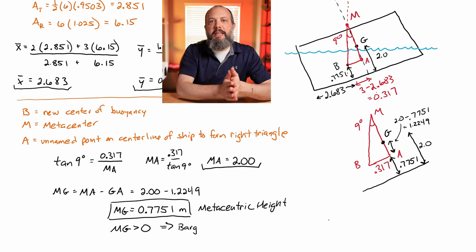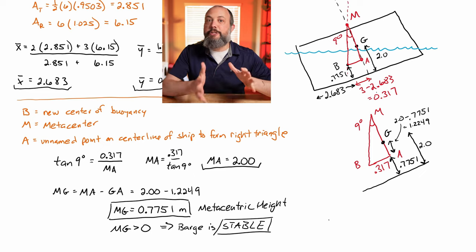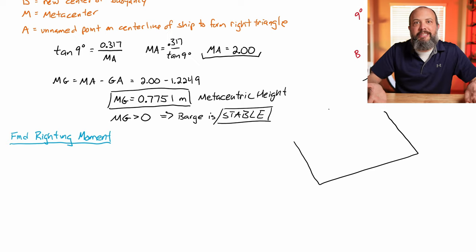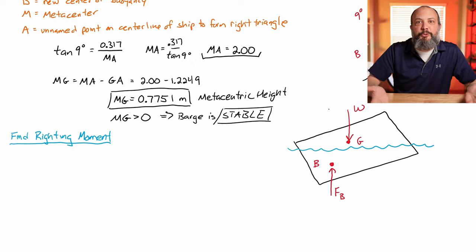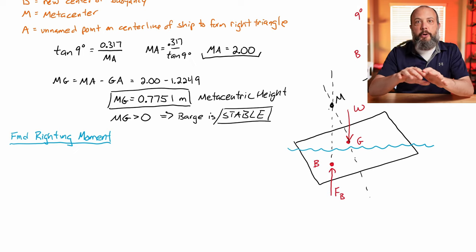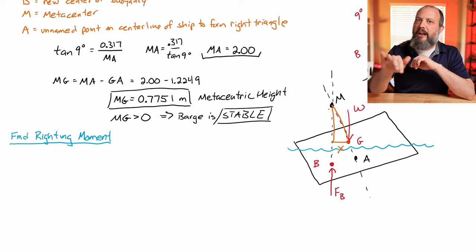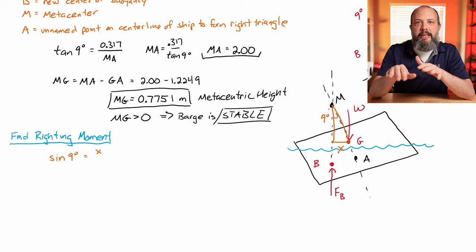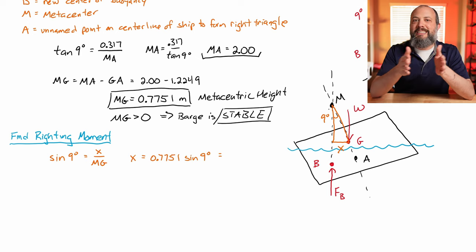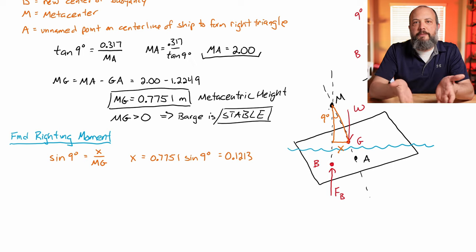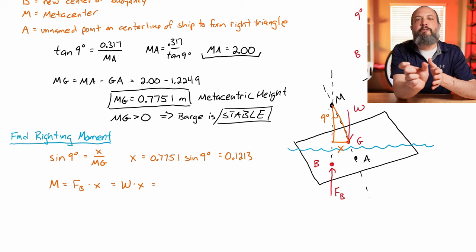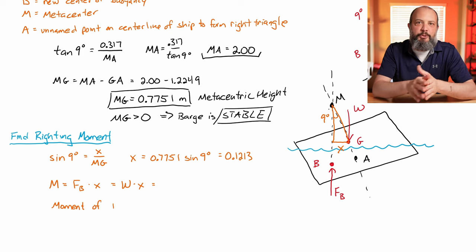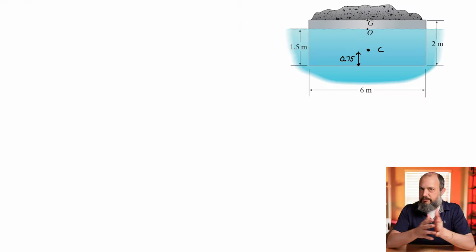A positive metacentric height means that the metacenter is above the center of gravity, which means the ship will be stable — the righting moment will cause the ship to right itself. If you wanted to calculate the righting moment, the buoyancy force is equal to the weight of the barge. Then you need the straight horizontal distance — not the angled x direction of 0.3168, but the straight horizontal distance between the weight vector and the buoyancy force vector. So the righting moment is the buoyancy force times the leverage arm, the straight horizontal distance between buoyancy force and center of gravity.